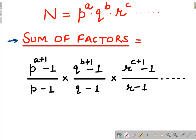If you have a number N and if we write the prime factorization of that number, say it be P raised to power a into Q raised to power b into R raised to power c. What is sum of factors formula? It will be P raised to power a+1 minus 1 upon P minus 1 into Q raised to power b+1 minus 1 upon Q minus 1 into R raised to power c+1 minus 1 upon R minus 1 and so on. So we will make use of this formula.